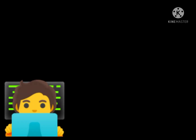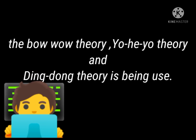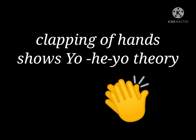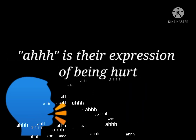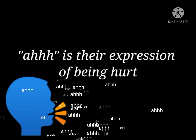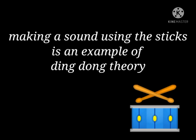The video shows how the Bow Wow Theory, the Yuihejo Theory, and the Ding Dong Theory are being used. Clapping of hands shows the Yuihejo Theory. The 'ah' is the expression of being hurt. Using the sound of a monkey is an example of the Bow Wow Theory. Making a sound using sticks is an example of the Ding Dong Theory.